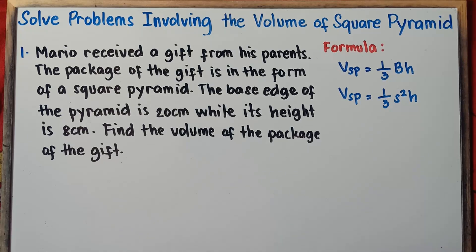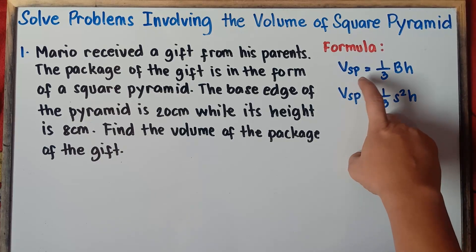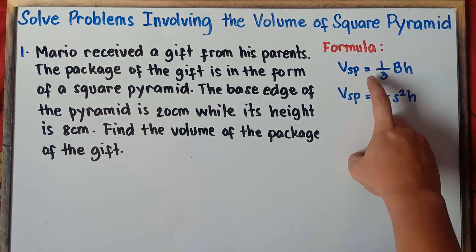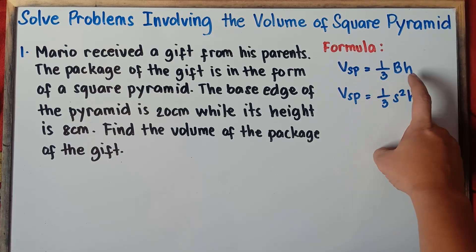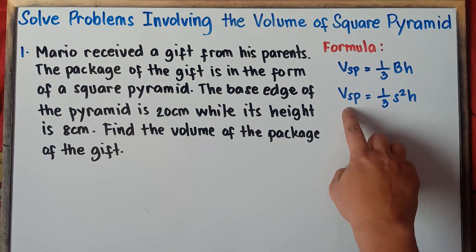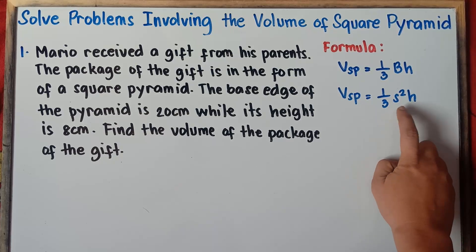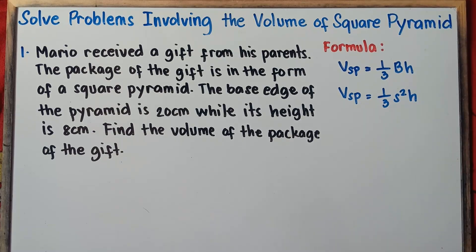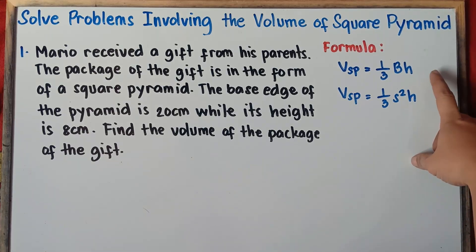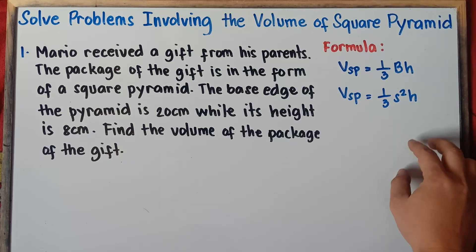I will give you three examples for you to really understand this. Our formula for finding the volume of a square pyramid is: volume equals one-third times the area of the base times height — where capital B stands for the area of the base. Or you can use the second formula: volume equals one-third times S squared times height, where S stands for the base edge or base side. If you are given the area of the base and the height, use the first formula. If you are given the base side or base edge and the height, use the second formula.